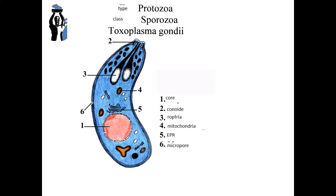Toxoplasma also has other vital organoids: core, mitochondria, microsomes, etc.